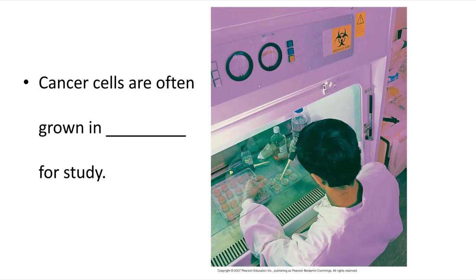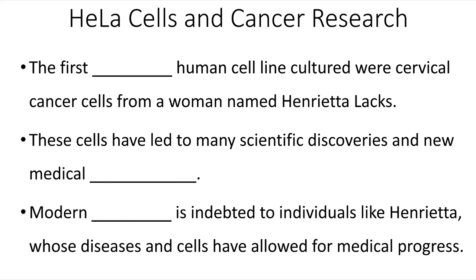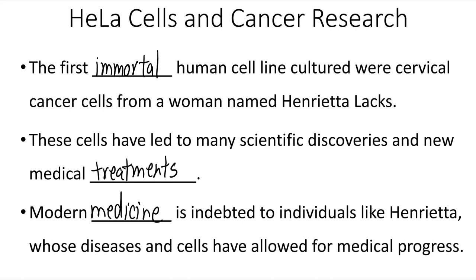Cancer cells are often grown in culture to study, and a lot of research is done on cancer — but this is a case where bioethics play a very important role. HeLa cells are a cell line obtained from a woman named Henrietta Lacks. This was our first immortal human cell line, meaning these cells are able to grow indefinitely in culture as long as they have nutrients. HeLa cells have led to many scientific discoveries and new medical treatments, and modern medicine is indebted to individuals like Henrietta, whose diseases and cells have allowed for medical progress.